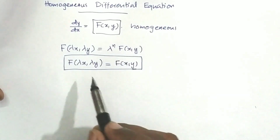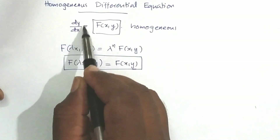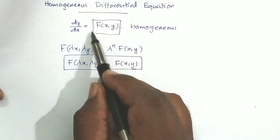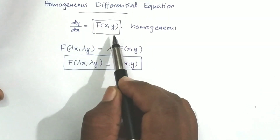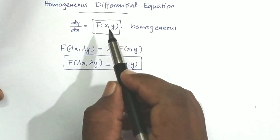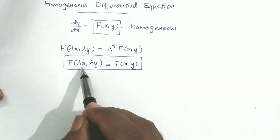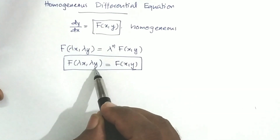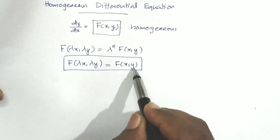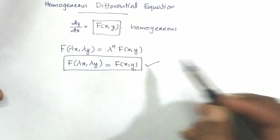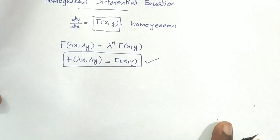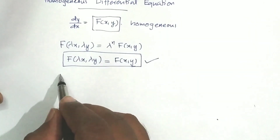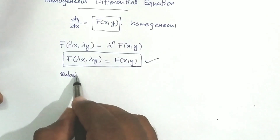If you have a function dy/dx equal to f(x, y), choose f(x, y). Substituting λx and λy will show the function is homogeneous. For a homogeneous differential equation, we use the substitution method to solve.